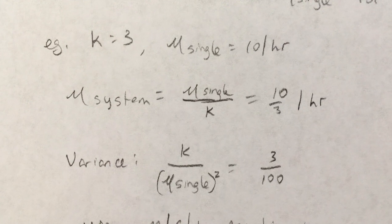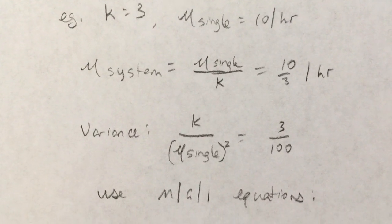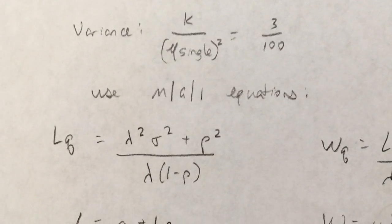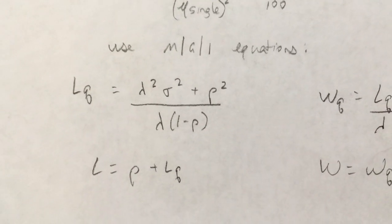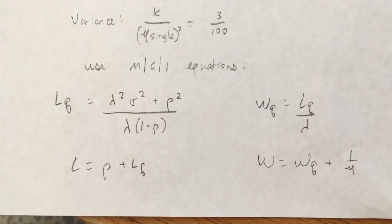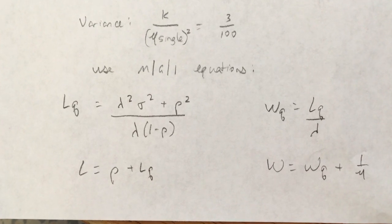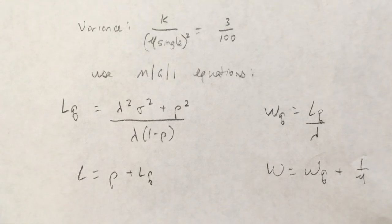These are exponential service times for these subprocesses. And now we can use the M/G/1 equations. So we have the exact same ones we were using before: L_Q, L, W_Q, and W. And you can just plug your numbers in and solve. And in this example we don't have our arrival rate, so you can try this out if you like.